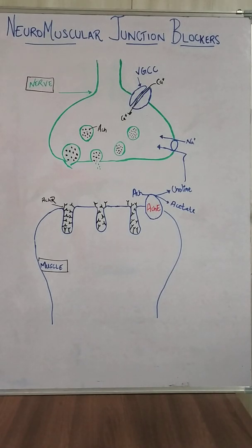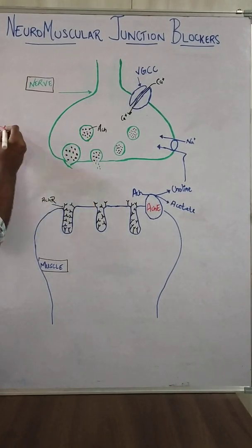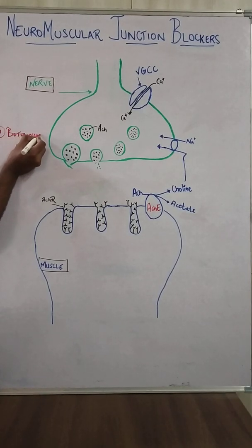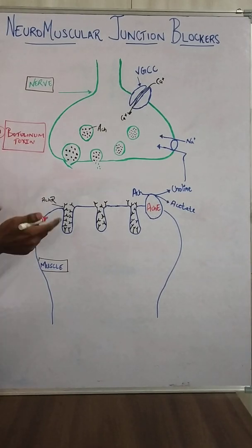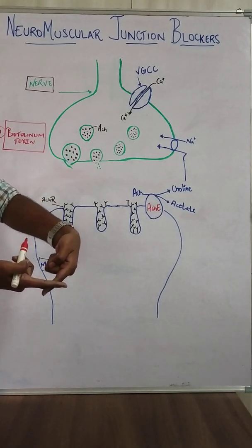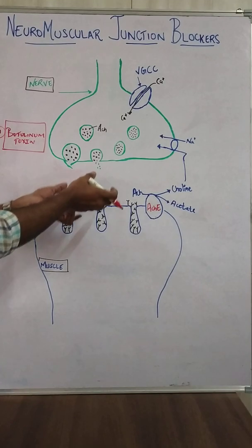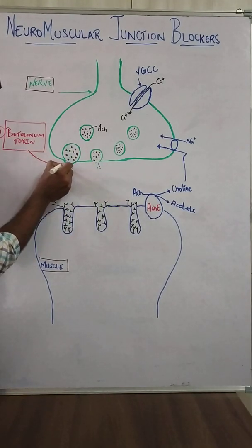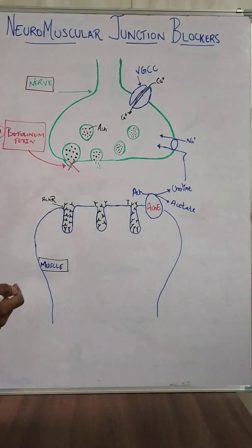The first toxin which acts on the neuromuscular junction is botulinum toxin. Botulinum toxin acts on the SNARE proteins. For exocytosis of acetylcholine, SNARE proteins are present — whenever acetylcholine has to be exocytosed, these SNARE proteins open. Botulinum toxin blocks these SNARE proteins, so there is no exocytosis of acetylcholine.